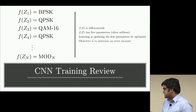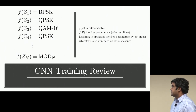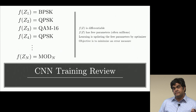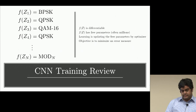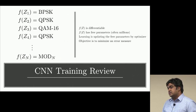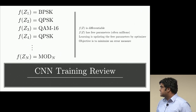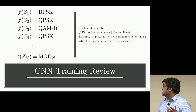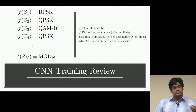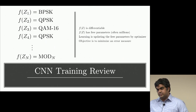Here's how you train these things. You have labeled data — examples Z1, Z2 to ZN, each with a label. The function F is the neural net, mapping IQ samples to output. Key points: F of Z has to be differentiable, it often has millions of free parameters, and learning is just a gradient-based weight update procedure to find the parameters that make the problem be solved.